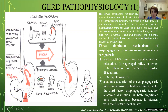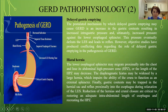Three dominant mechanisms of esophagogastric junction incompetence are recognized. First is transient lower esophageal sphincter relaxation — a vago-vagal reflex in which sphincter relaxation is elicited by gastric distension when food enters the gastric lumen. Second is lower esophageal sphincter hypotension. Third is anatomical distortion of the esophagogastric junction, including hiatal hernia. The third factor is significant on its own and also because it worsens both of the first two mechanisms.